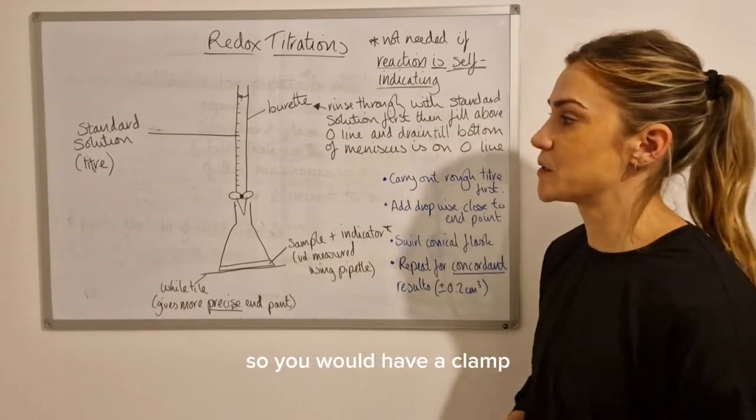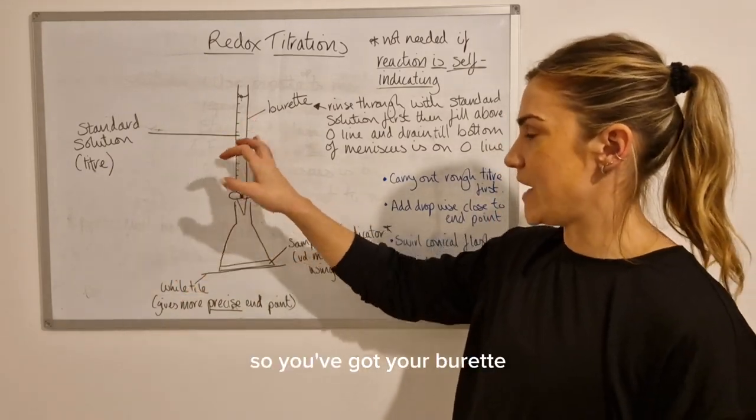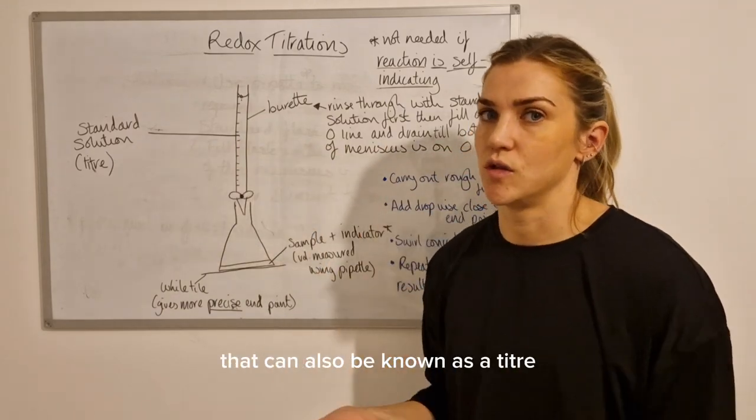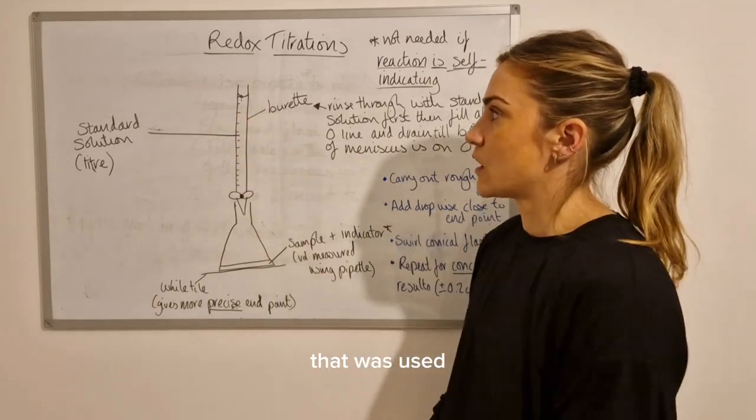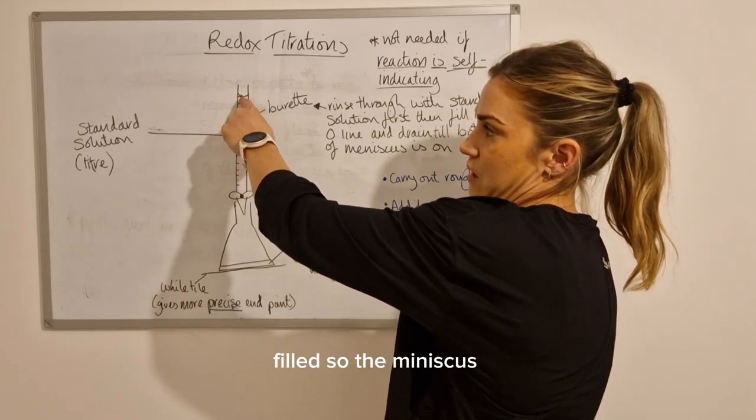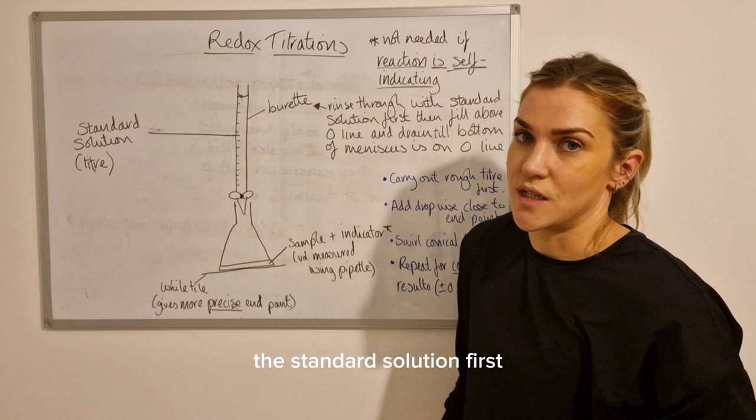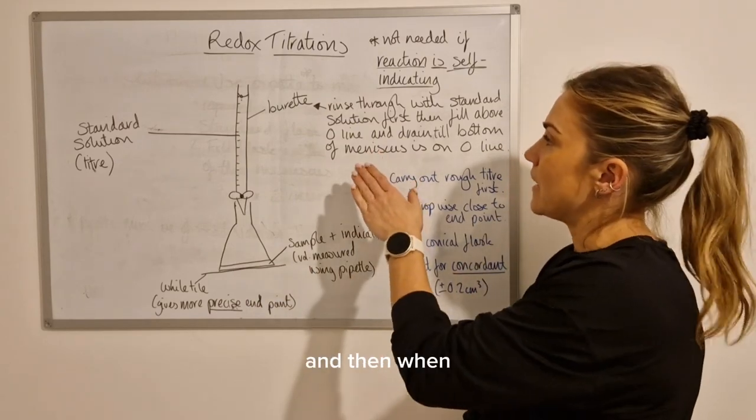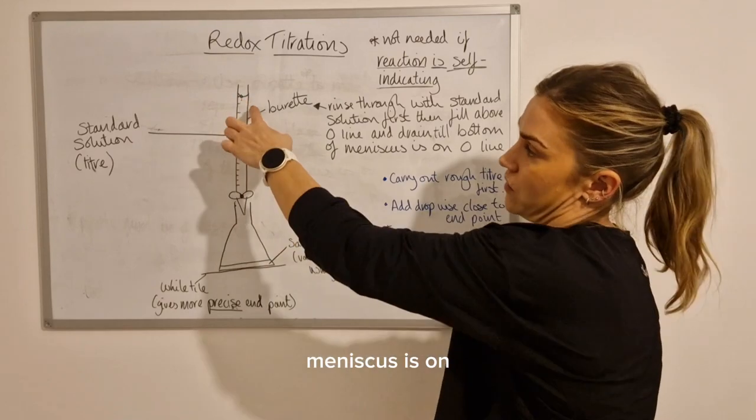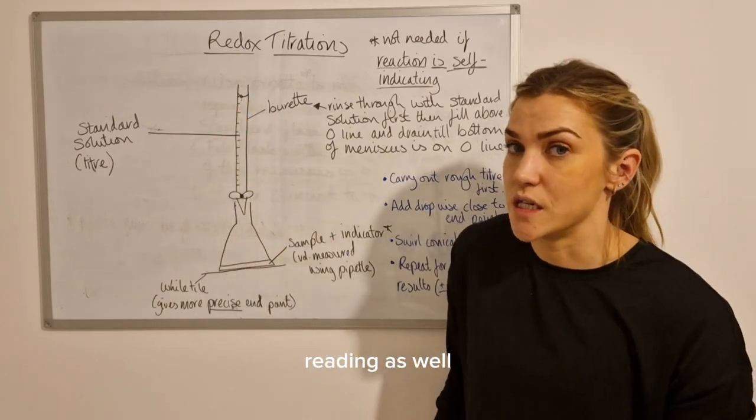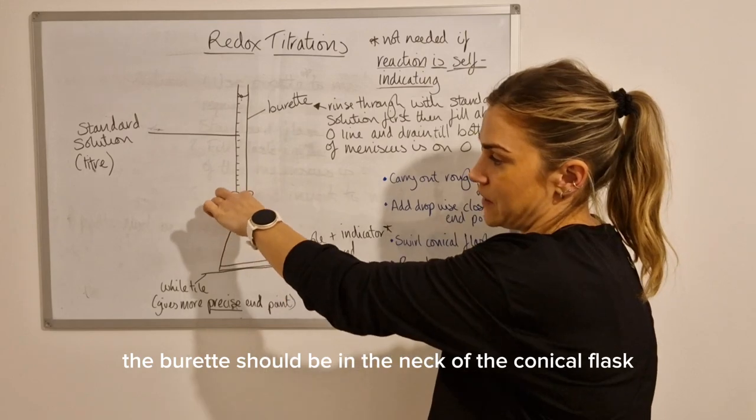Now we're on to the actual titration setup. You would have a clamp stand here, the burette - it's not just floating, I just haven't drawn it in. So you've got your burette which contains your standard solution that can also be known as the titer. So if you get anything known as like a titer volume, that's the volume of the standard solution that was used. You'll notice the burette is filled so the meniscus is on the zero line. But before you fill the burette up, you want to rinse it through with the standard solution first just to clear it out. And then when you're filling the burette, you fill it above the zero line and then drain it until the bottom of the meniscus is on that zero line. Anytime you're taking a burette reading as well, it's always from the bottom of the meniscus.